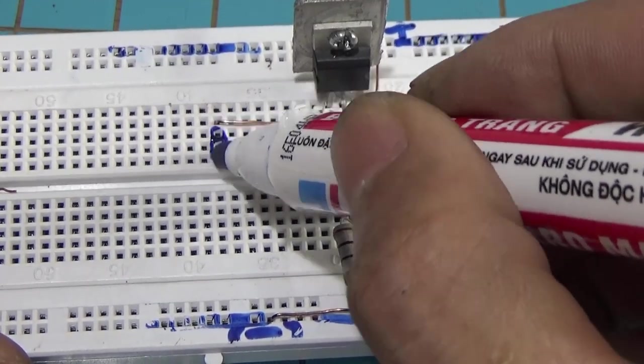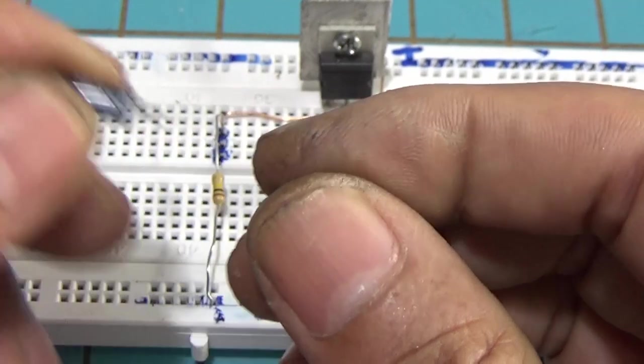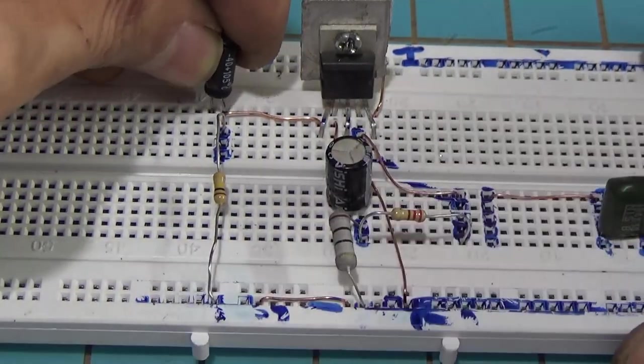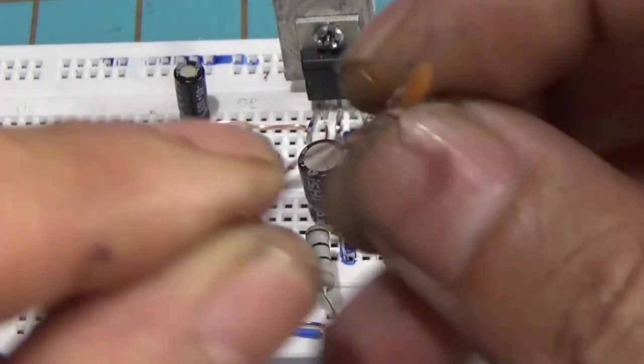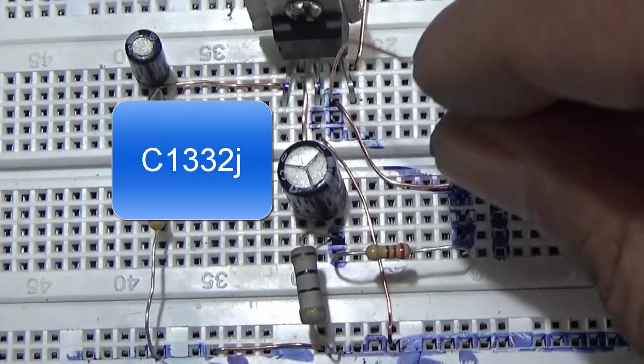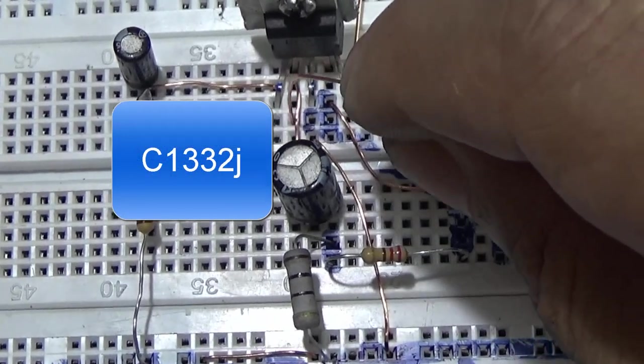Tại chân số 1 mình sẽ vẽ ra một đường và đó là cái đường tín hiệu vào. Mình sẽ cắm con tụ 10 micro barra vào đấy. Và tiếp theo thì mình sẽ lấy thêm một con tụ nữa.